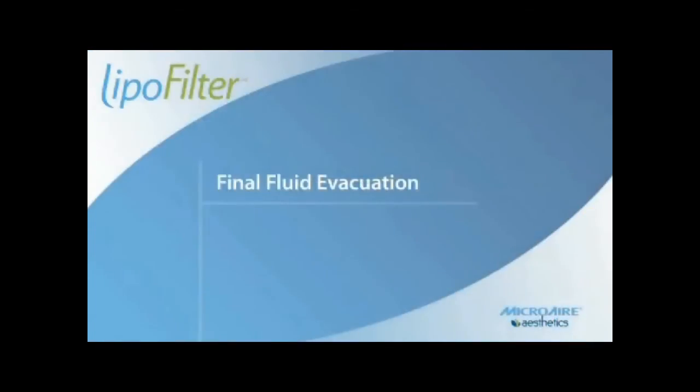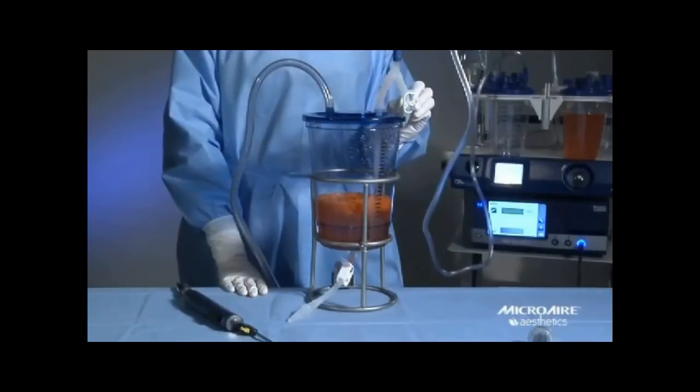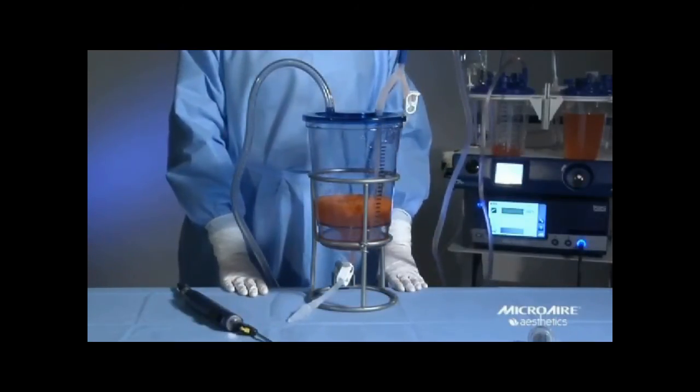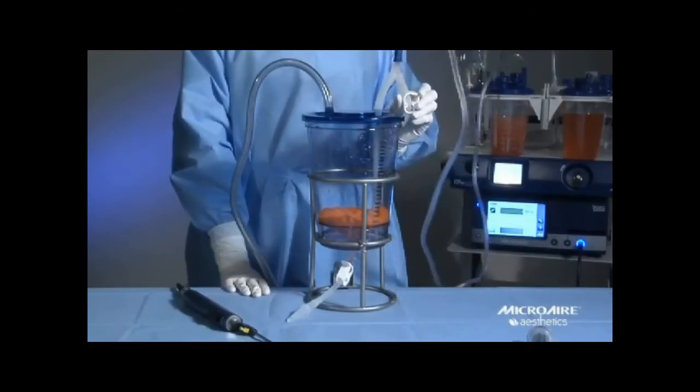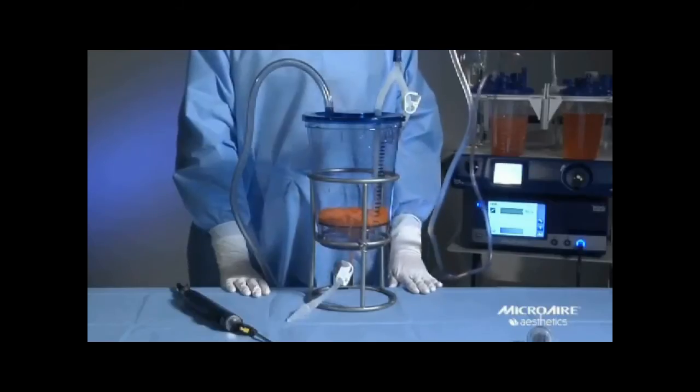For the final drainage, close the pinch clamp and drain the fluid. When the fat reaches the funnel, open the white pinch clamp and turn off the aspirator. This is important so you do not have a vacuum block when you extract the fat.